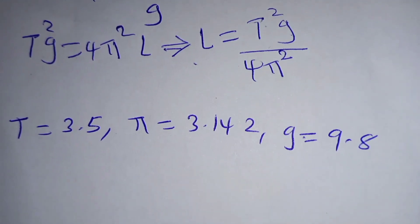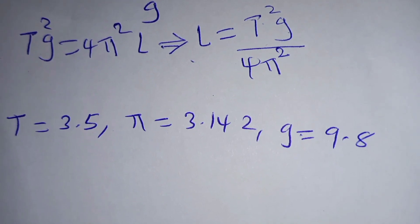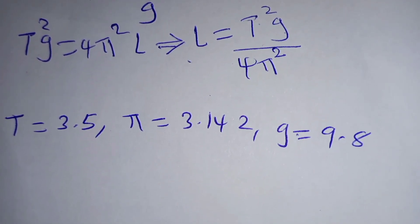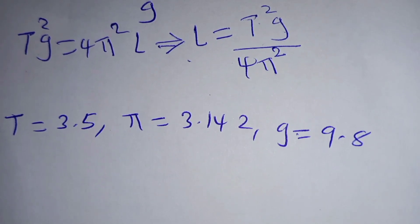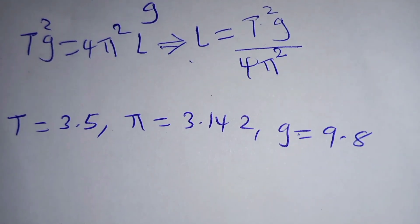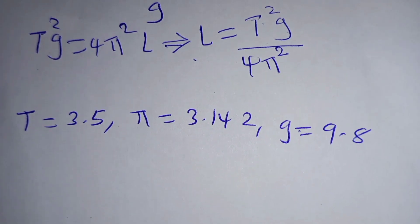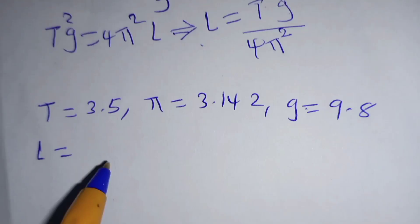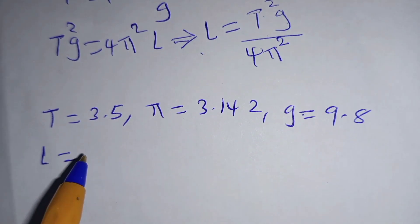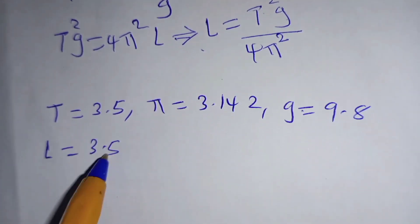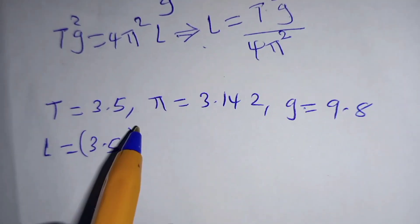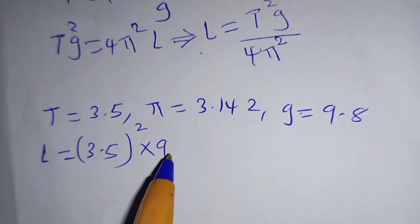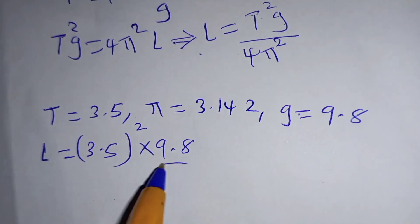We are given T = 3.5, π = 3.142, and g = 9.8. To obtain the value of L, we substitute: L = (3.5)² × 9.8 divided by...